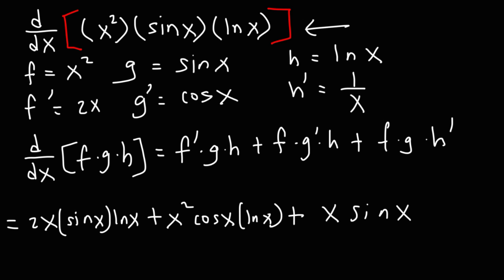The last thing we could do is factor out an x because we have it in each term. So if we want to, we can write our answer like this: x times 2 sine x ln x plus x cosine x ln x, and then plus sine x.